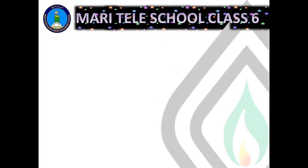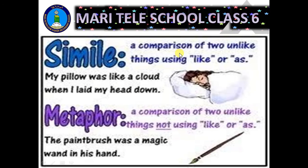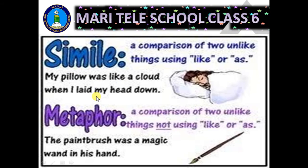To summarise the difference: a simile is a comparison of two unlike things using 'like' or 'as', whereas a metaphor is a comparison of two unlike things not using 'like' or 'as'. An example of a simile would be 'my pillow was like a cloud when I laid my head down', and an example of a metaphor could be 'the paintbrush was a magic wand in his hand'.